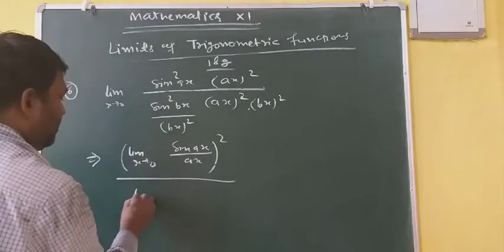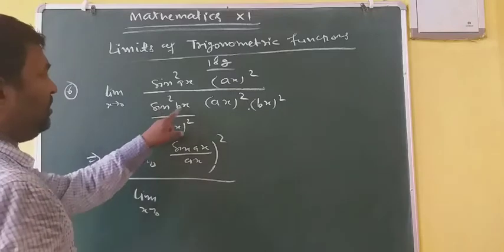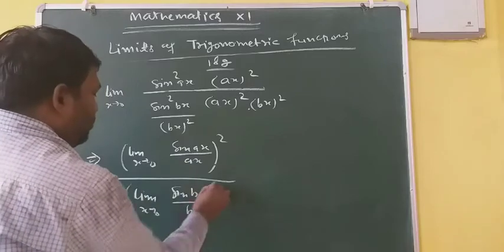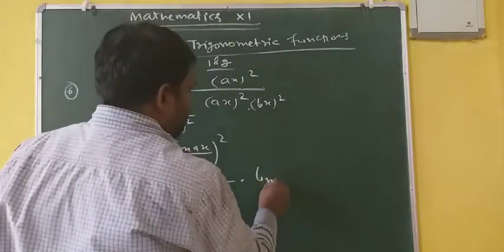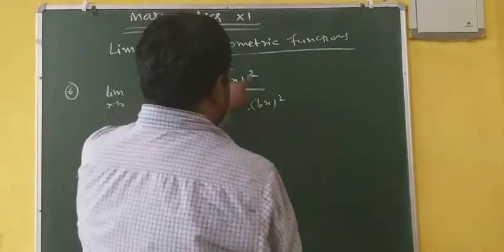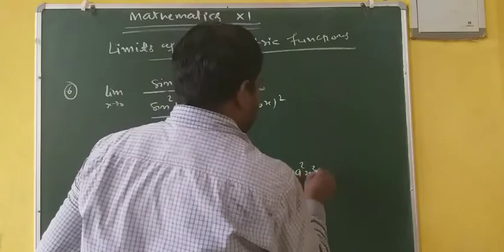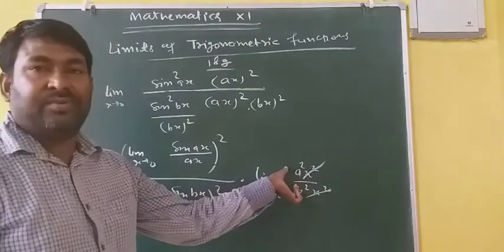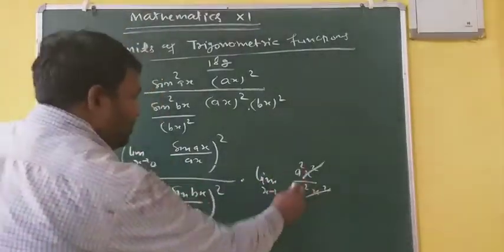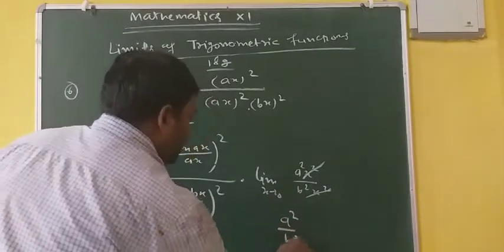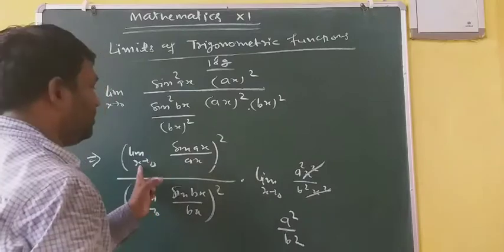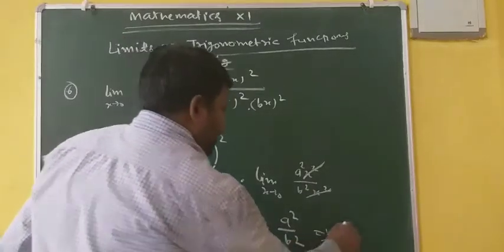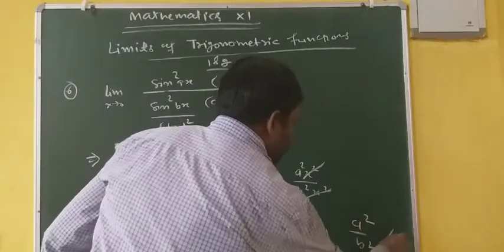This total can be written as: limit x tends to 0 of sin ax upon ax whole square, divided by limit x tends to 0 of sin bx upon bx whole square, into limit x tends to 0 of a²x² upon b²x². The x² cancels, so this is free from x — it becomes a²/b². Both sin-over-angle limits are 1, so the answer is a² upon b².